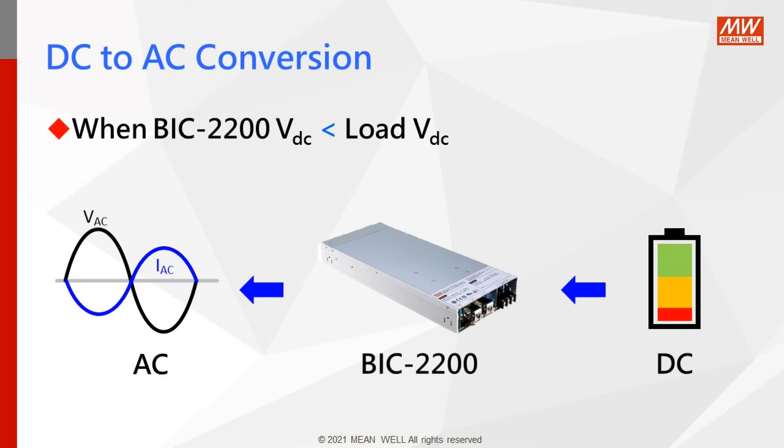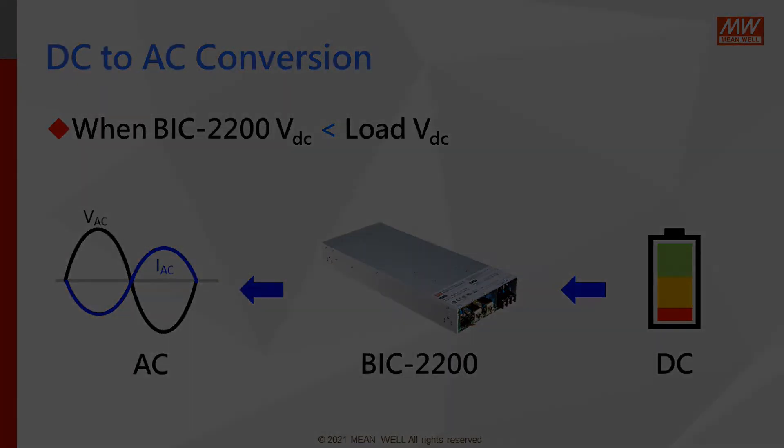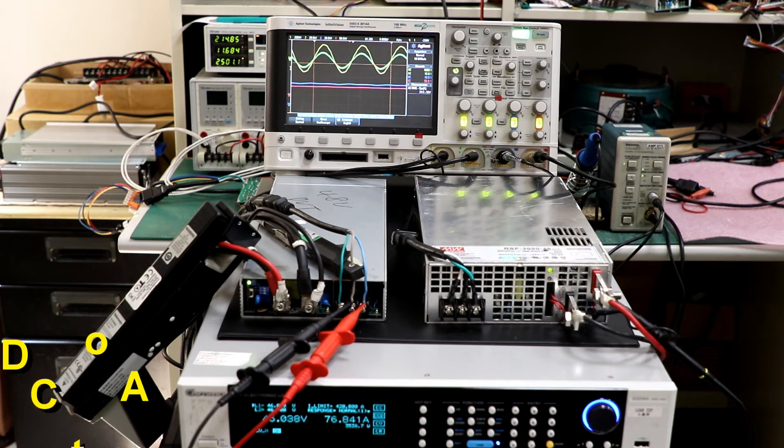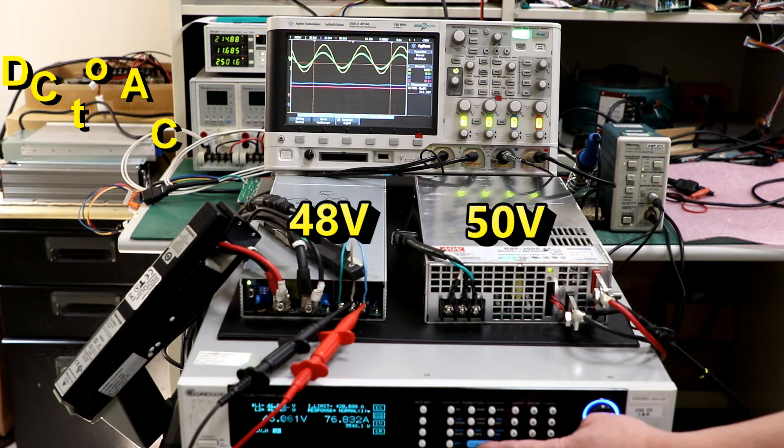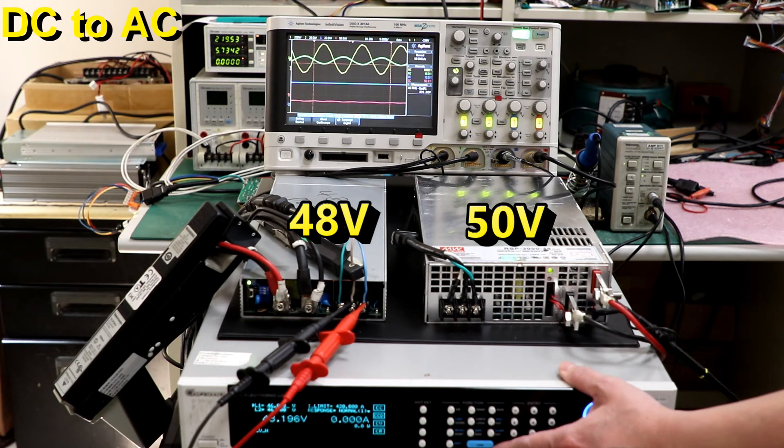We will be doing DC to AC conversion. Again, connect a power supply with 50 volt DC output, such as RSP-3000 to the BIC-2200, 48 volts. The supply will force the BIC to do DC to AC conversion.